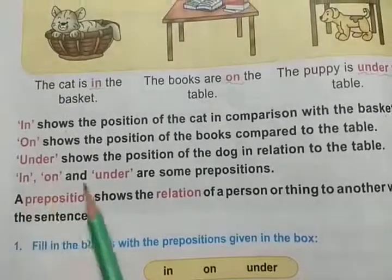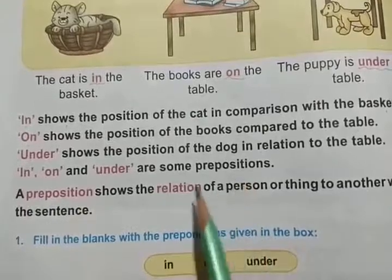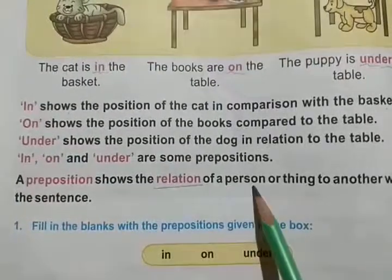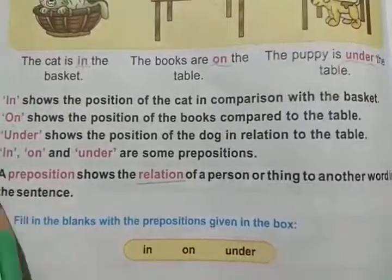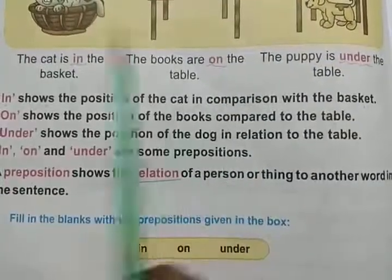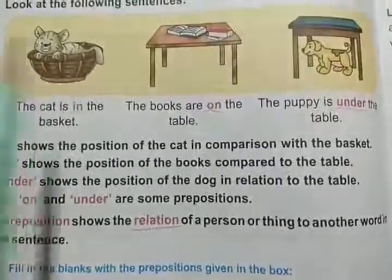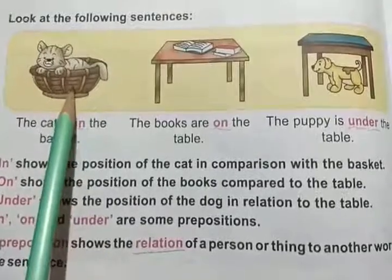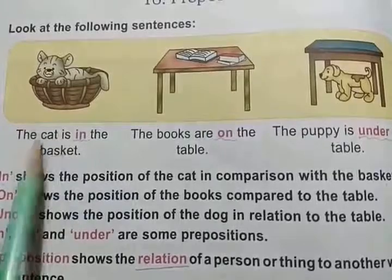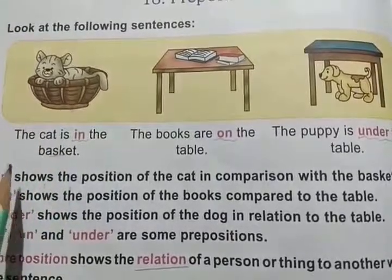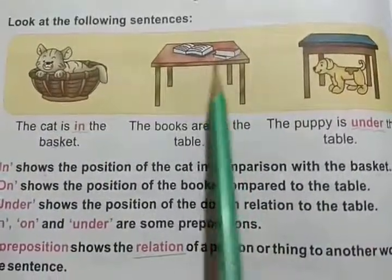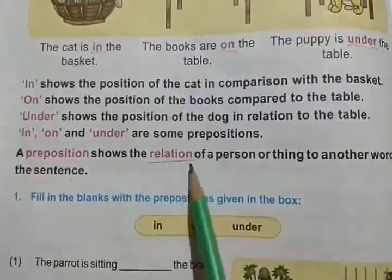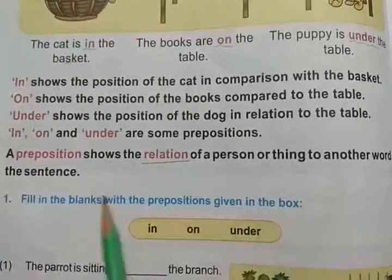In, on, and under are some prepositions. Remember, a preposition shows the relation of a person or thing to another word in the sentence. For example, the cat and the basket — it shows the relation of these two things. Also books and table, and puppy and table. So a preposition shows the relation of a person or thing to another word in the sentence.